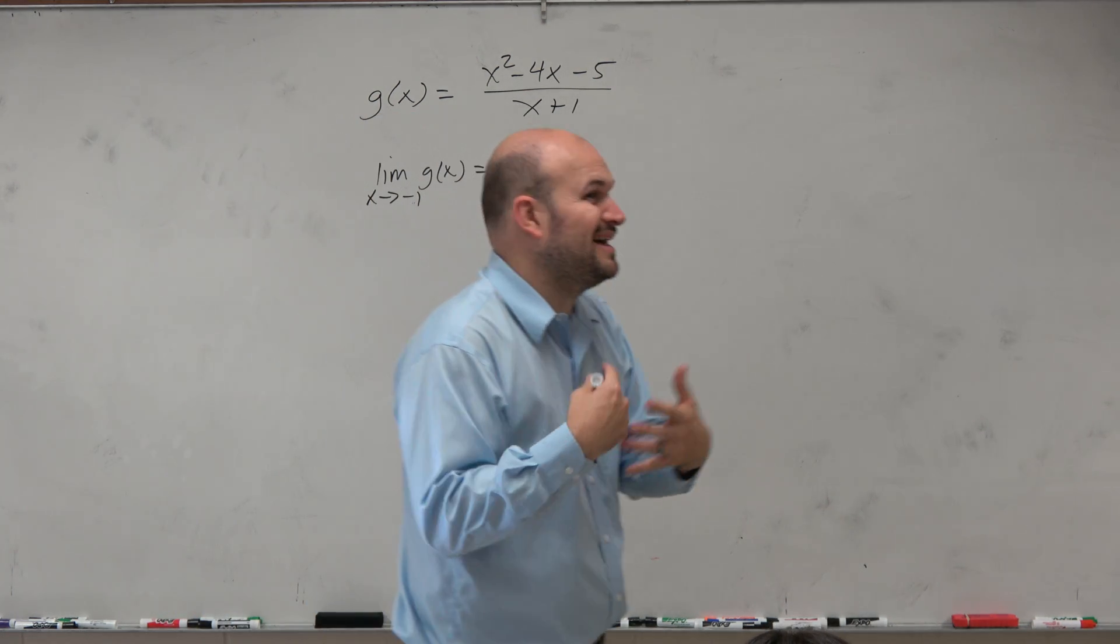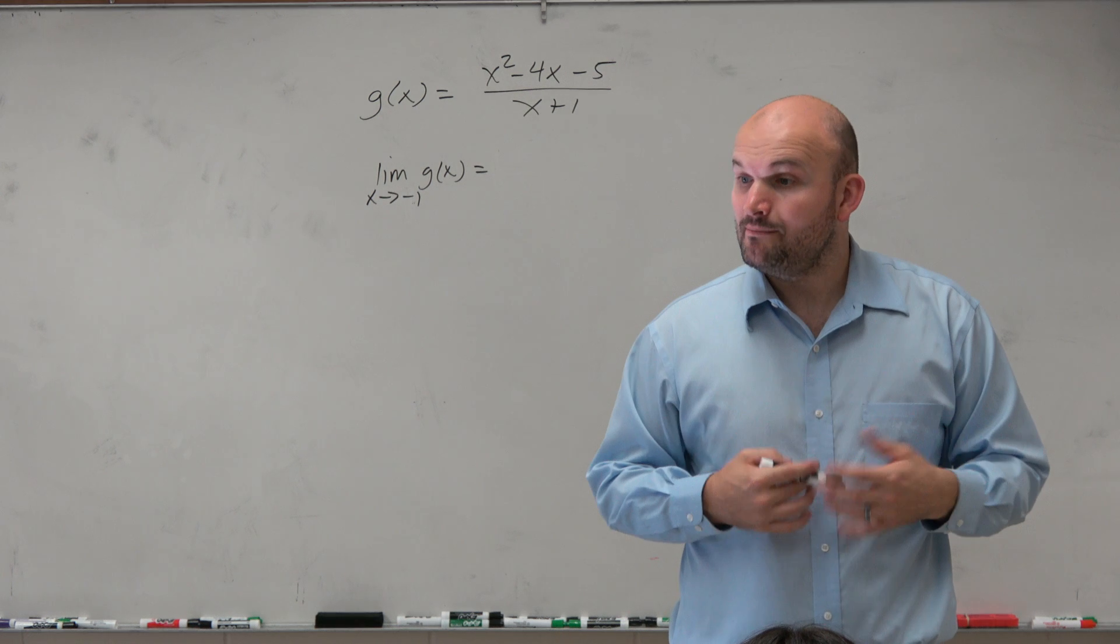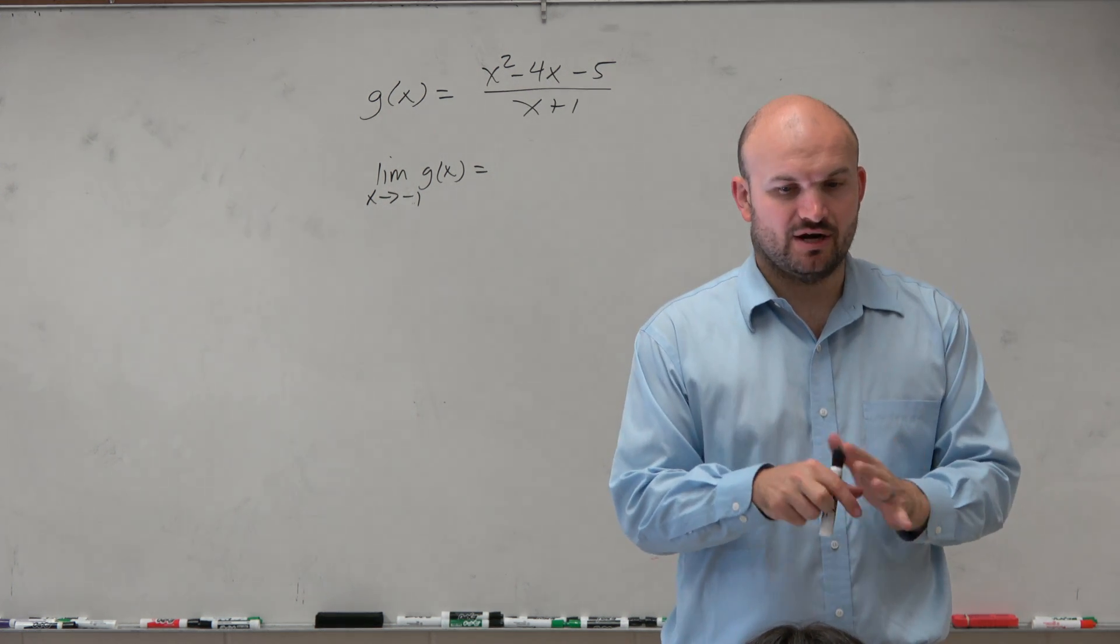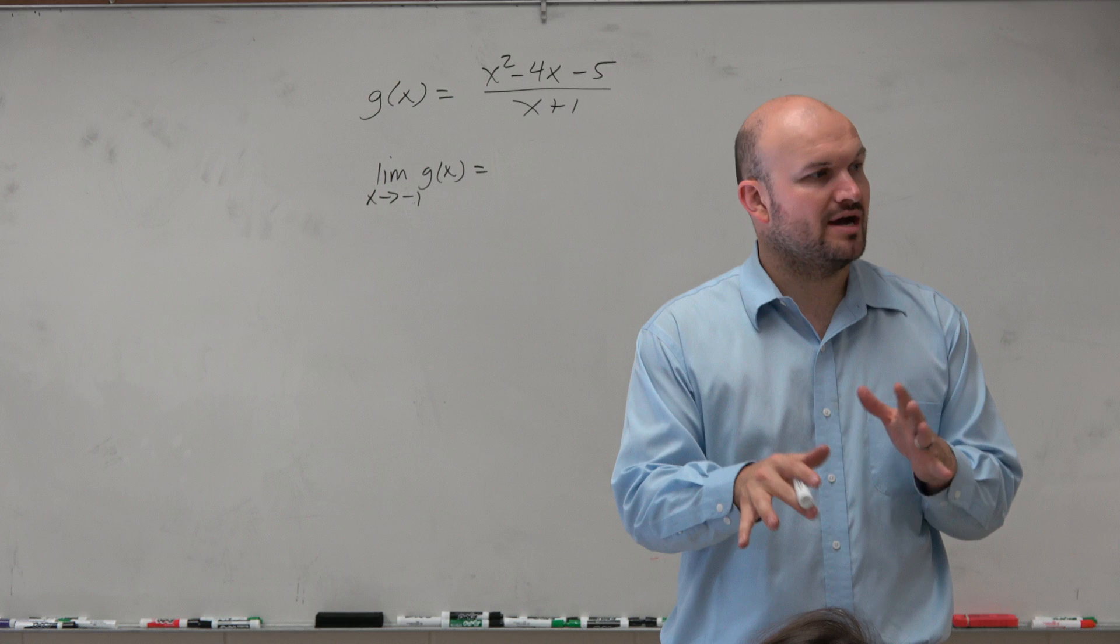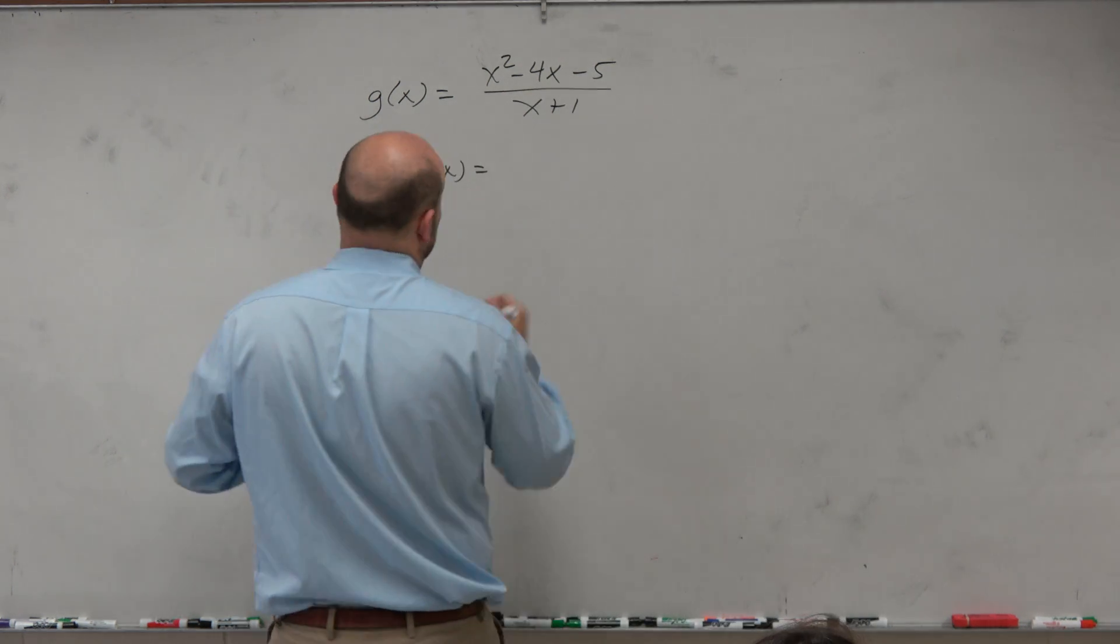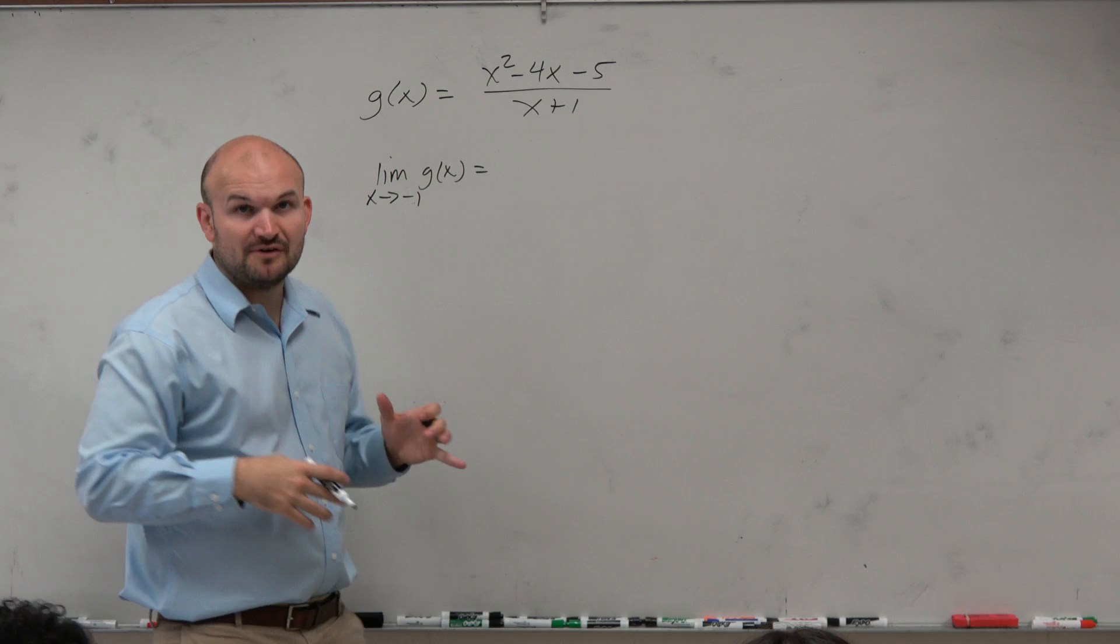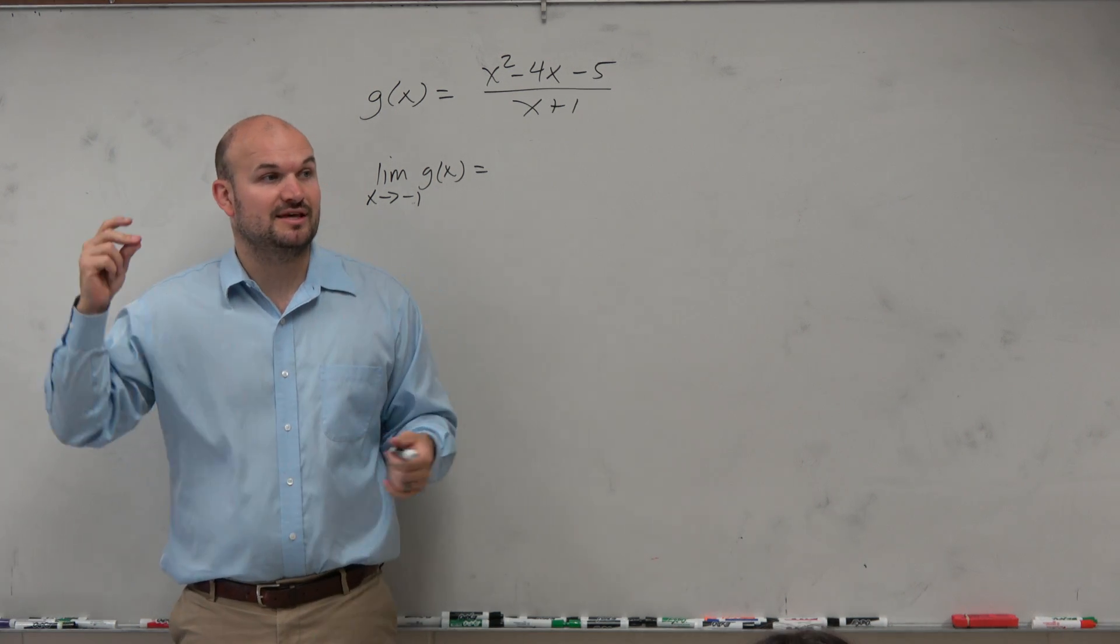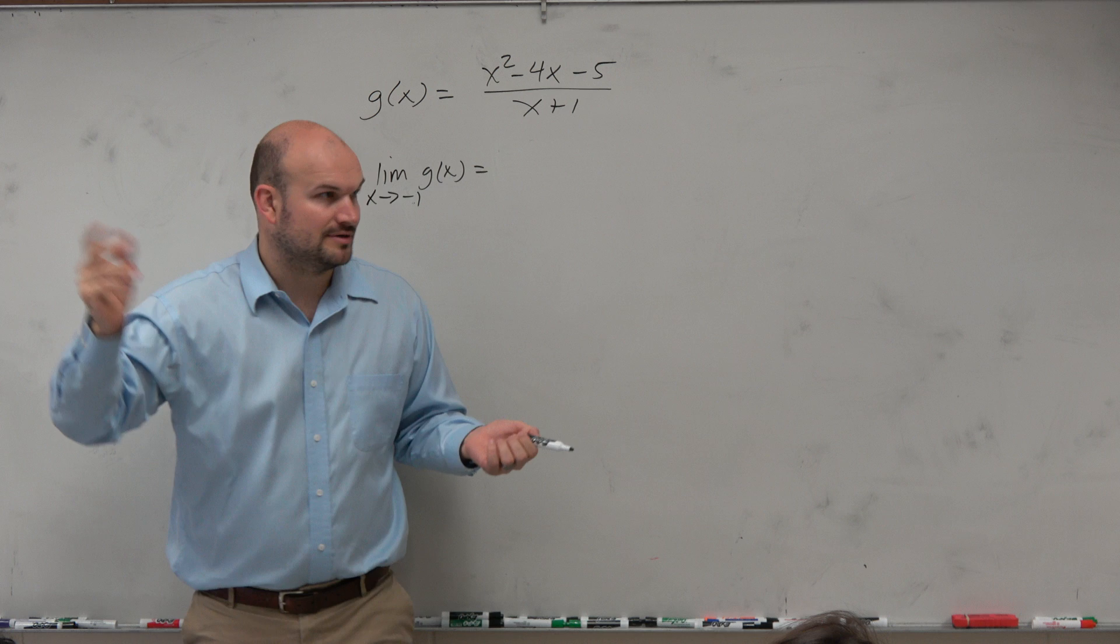Now, is it a hole or an asymptote? I don't know offhand. But what we could do is graph it. But don't forget your algebraic properties. You should be trained by now. If you see a trinomial, you should automatically think to factor, right?